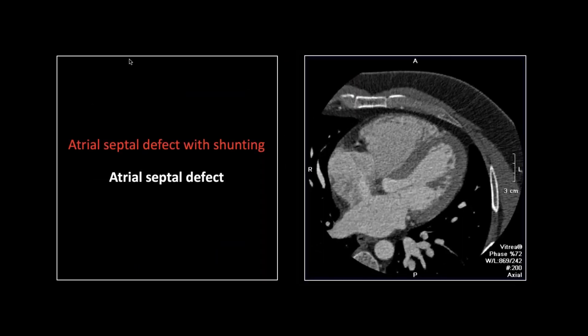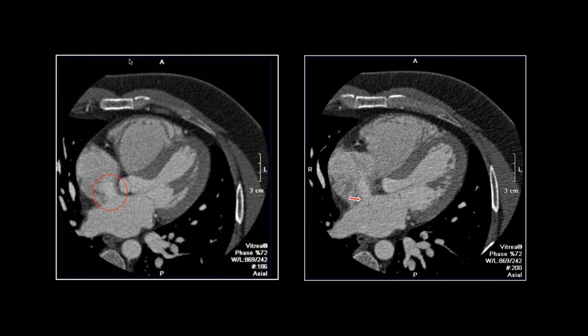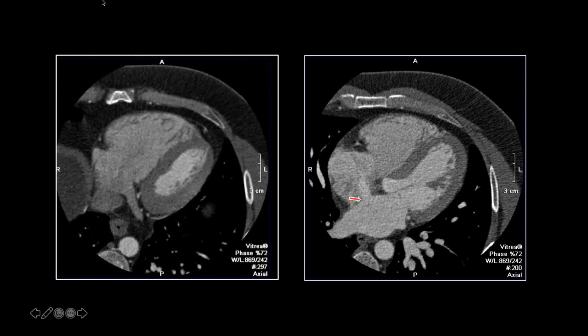Our next septal case is a great case of an ASD. You can see left-to-right shunting, the exact type you would expect in an uncomplicated ASD. The thing I always remember about this case is I did not spot the ASD right off, and the reason is I have a search pattern. It was taught to me by my old cardiologist partner, who said the best search pattern for coronary CTA is to follow the flow of blood — and he's absolutely right. So I was doing that; I followed the SVC down into the right atrium.